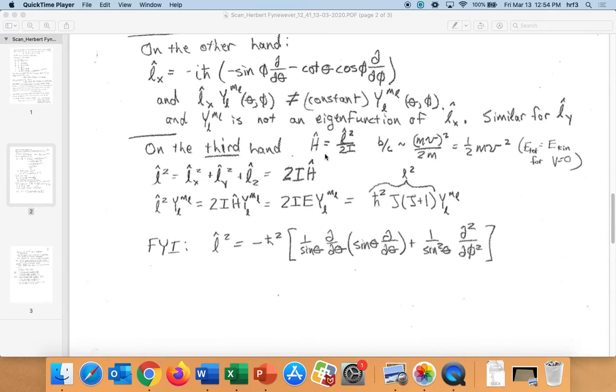On the third hand, if we look at the total energy, so the Hamiltonian, the Hamiltonian for the rigid rotor, as it turns out, is L̂² over 2I. Because the momentum squared is just like mv² divided by 2m, where the moment of inertia is like a mass. So this is like our kinetic energy, and all of our energy is kinetic in this case. This is just really an analogy for rotational motion. So L̂² equals L̂x² plus L̂y² plus L̂z², and this is equal to 2I times the Hamiltonian.